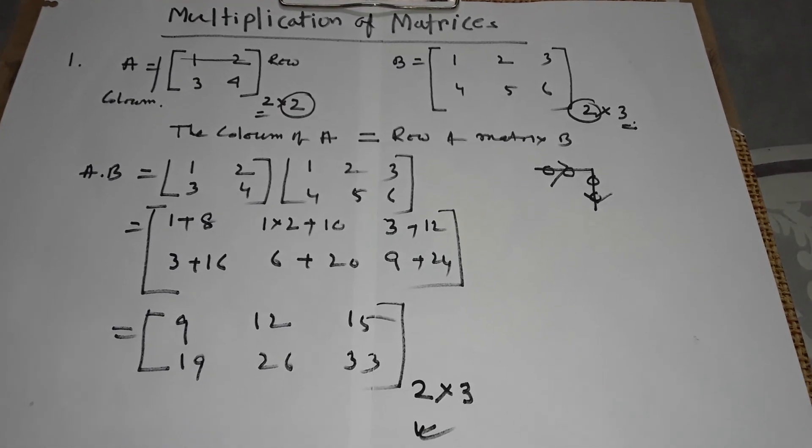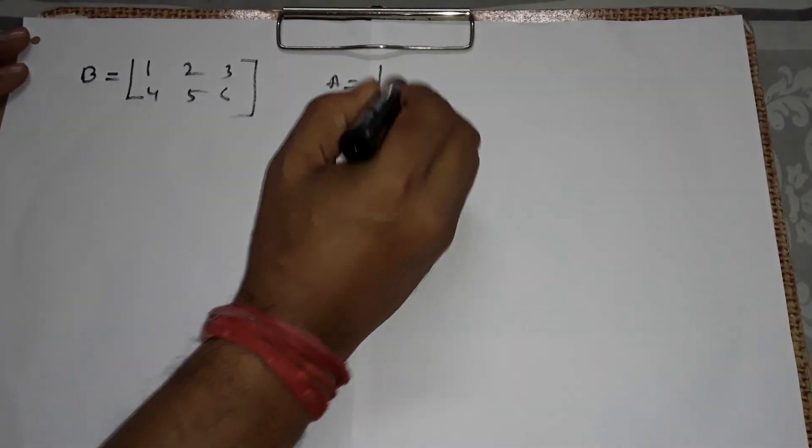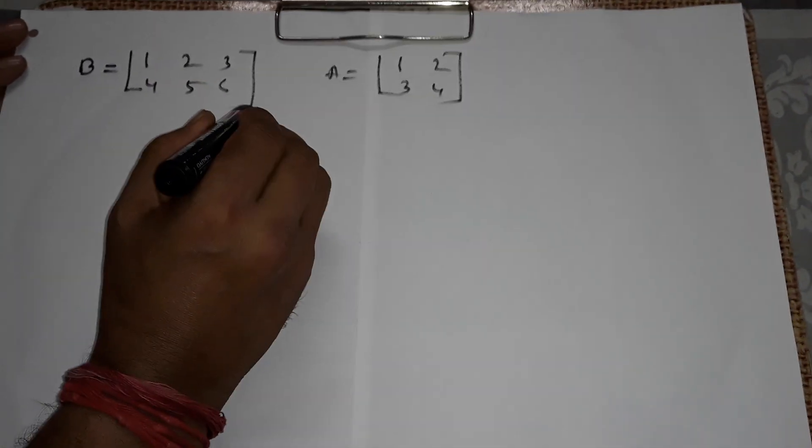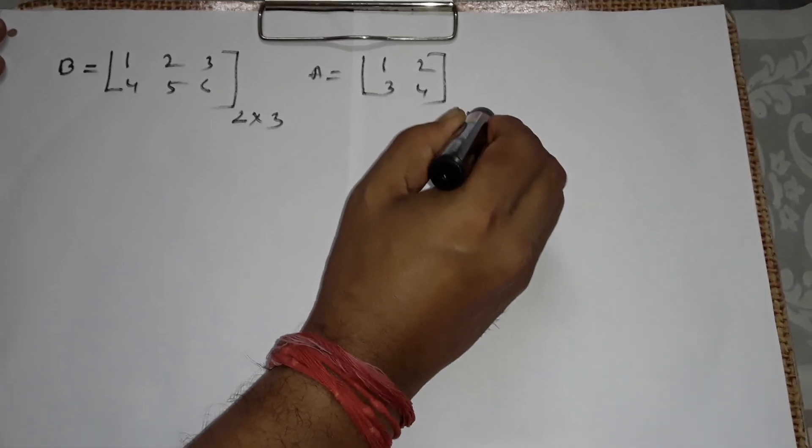Now I am giving again: B equals 1, 2, 3, 4, 5, 6 and A equals 1, 2, 3, 4. Its order is 2 into 3 and its order is 2 into 2.